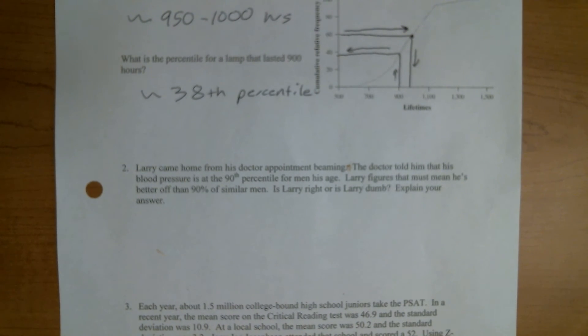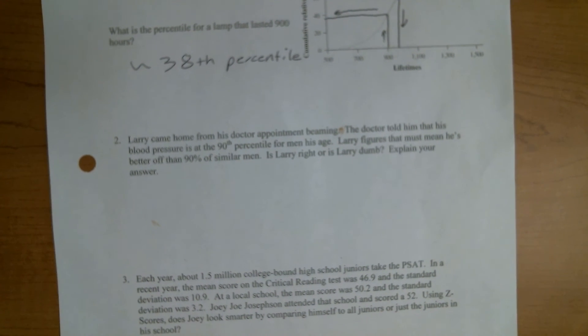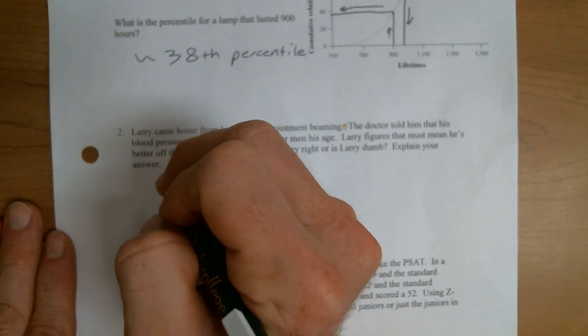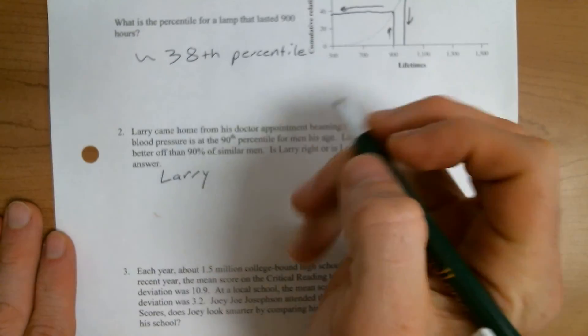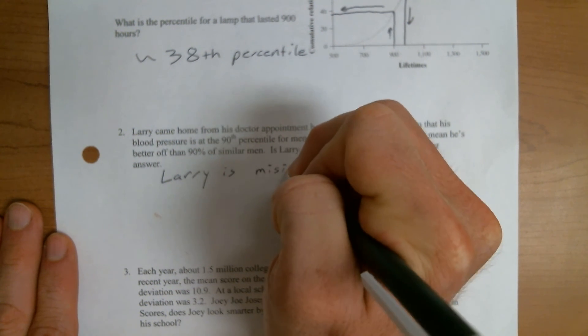Larry came home from his doctor appointment beaming. The doctor told him that his blood pressure is at the 90th percentile for men his age. Larry figures that means he's better off than 90% of similar men. Is Larry right or is Larry dumb? Explain your answer. Unfortunately, in this case, Larry, let's just say, is misinformed.